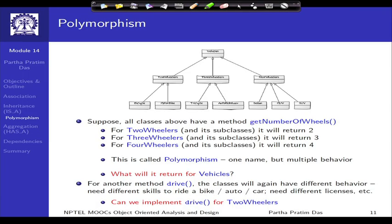Welcome back to module 14 of Object Oriented Analysis and Design. We have been discussing relationships among classes — association and the concept of inheritance. Now we continue on the most important concept related to inheritance, which is polymorphism.